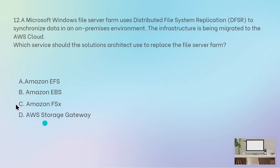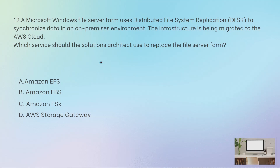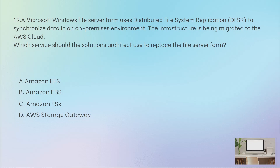Mark your keywords: it is a Windows file server and it uses Distributed File System replication. Now, EBS is not a file server — EBS is used for block-based volumes that are attached to EC2 instances, so it cannot be used for replacing a shared Windows file server. Then Storage Gateway — why is it wrong? It is a service used for providing cloud storage solutions for on-premises servers. Since the infrastructure is being migrated to cloud, you will not use Storage Gateway.